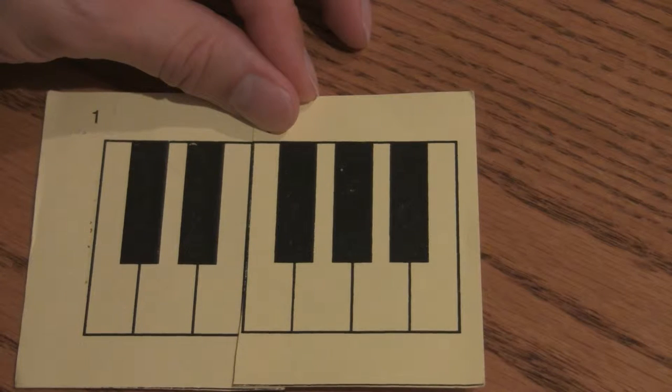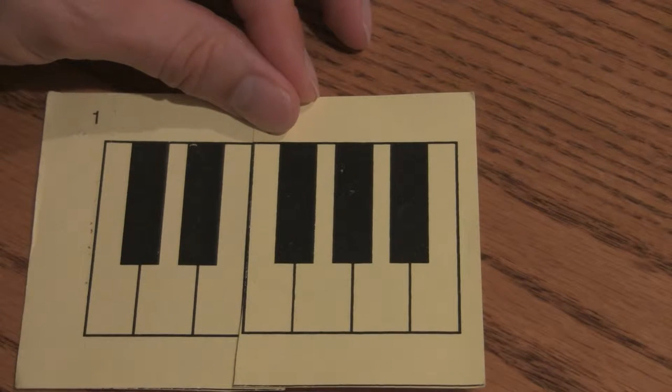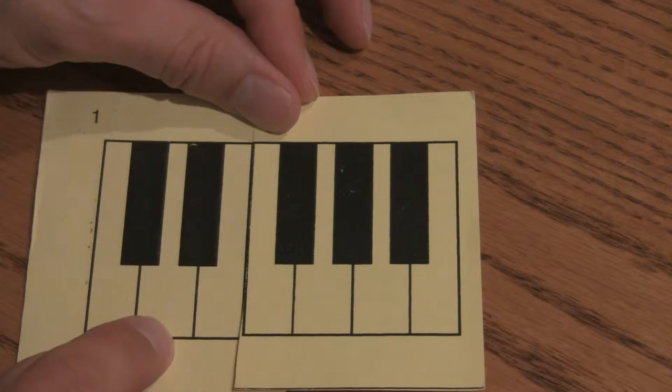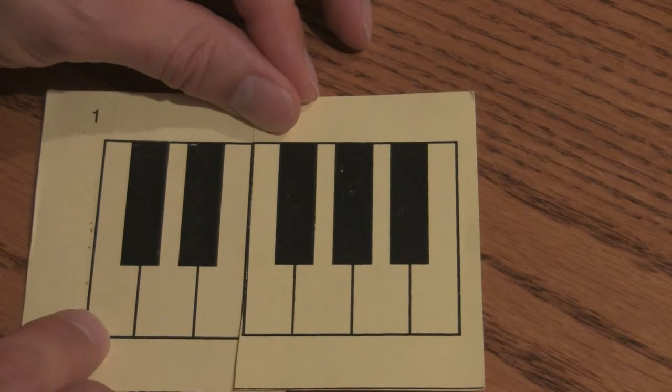So these gaps are important. The two black notes are the most popular places to start. The note between the two black notes is D, and just below that is C.